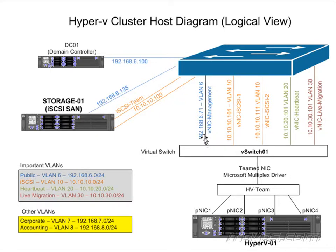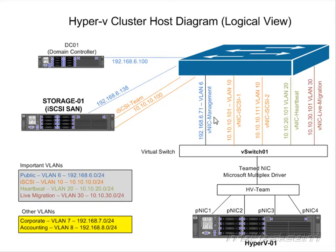In the virtual switch, we're going to create five virtual network adapters. One for management traffic on VLAN 6. Two for iSCSI traffic on VLAN 10. One for heartbeat or cluster communications on VLAN 20. And one for live migration traffic on VLAN 30. When we create these virtual network adapters, we're also going to use quality of service to ensure that each type of traffic has enough bandwidth and that one type of traffic won't use so much bandwidth that it hinders another.